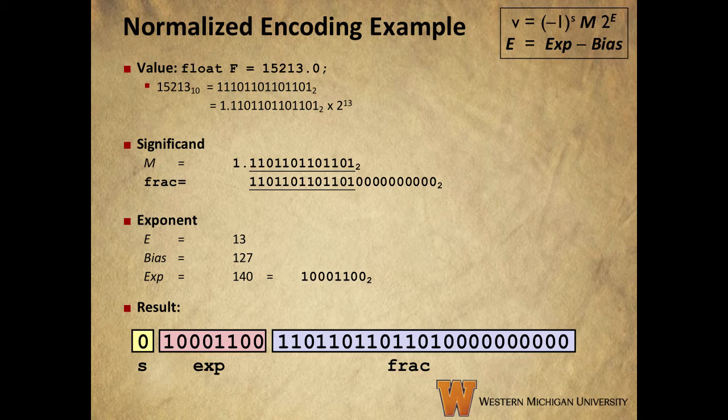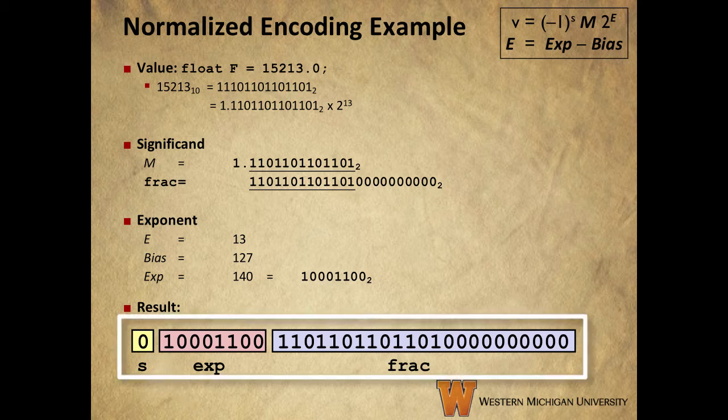Next, we encode the EXP field. Remember that our E value is 13, and we calculate E by subtracting the bias from the unsigned value of the bits in the EXP field. Because we are using single precision, we know that we have 8 bits in the EXP field, which gives us a bias of 2 to the 7 minus 1, or 127. A little bit of algebra tells us that the unsigned value of EXP should be E plus the bias, or 140, which translates to 1, 0, 0, 0, 1, 1, 0, 0 in base 2. Our original number is positive, so the signed bit should be set to 0. Putting all of that together gives us our 32-bit representation of the floating point number 15,213.0.